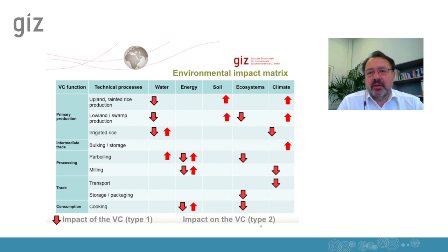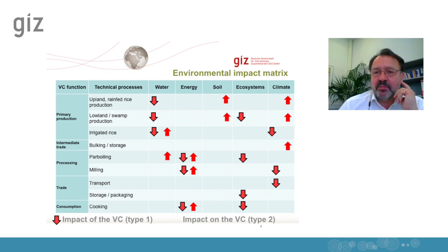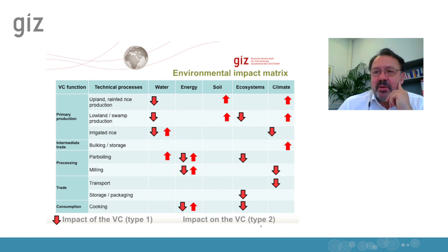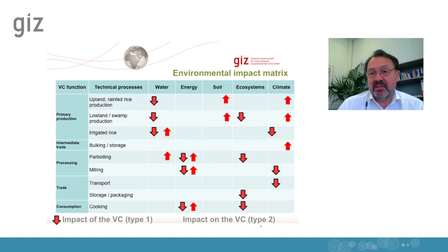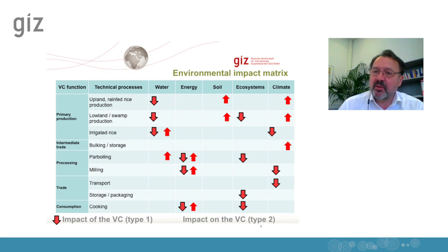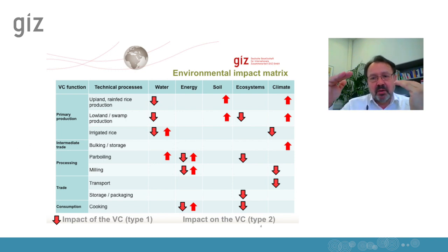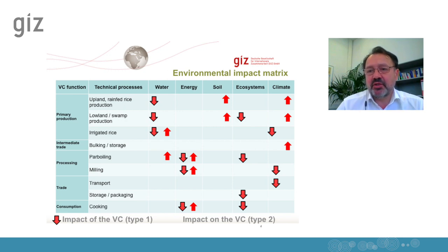We go one step further by detailing the technical functions into technical processes. For instance, if we look at primary production for the environmental impact, it makes a difference whether we talk about upland rain-fed rice production, lowland swamp production, or irrigated rice production systems. So we detail the value chain functions.